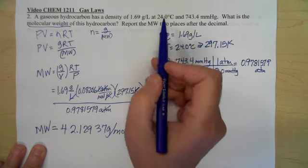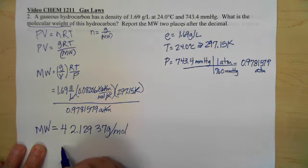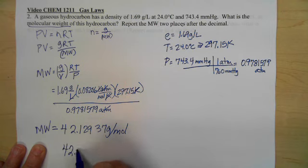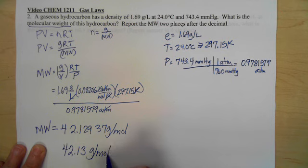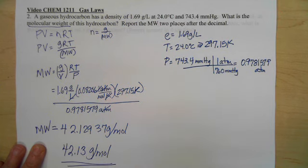Now our units are correct and we're said to report two places after the decimal, so it's 42.13 grams per mole is my molecular weight for this problem.